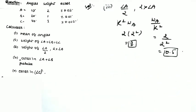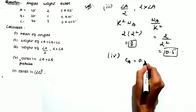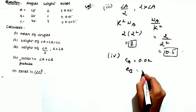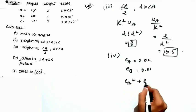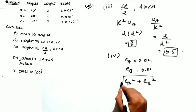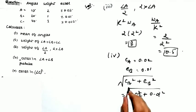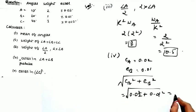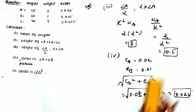The next part asks for the probable error in angle A + angle B. The error in angle A is 0.02 and the error in angle B is 0.01. When adding, the combined error is √(0.02² + 0.01²) = 0.022 degrees — this is the error involved in angle A + angle B.